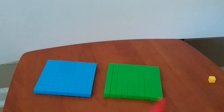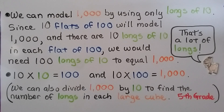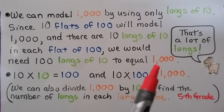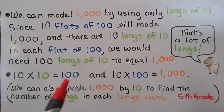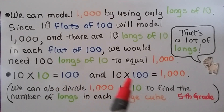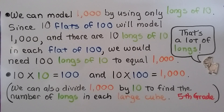We can model 1,000 using only longs of 10. Since 10 flats of 100 model 1,000 and there are 10 longs in each flat, we would need 100 longs of 10 to equal 1,000. So 10 times longs of 10 equals a flat of 100, and 10 times flats of 100 equals 1,000. We can also divide 1,000 by 10 to find the number of longs in each large cube, but we won't get into that until 5th grade — that's 2-digit long division.